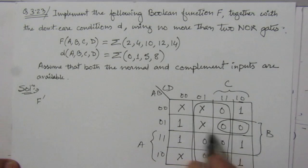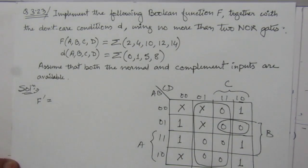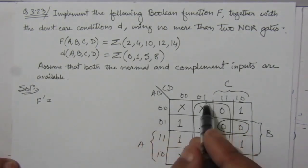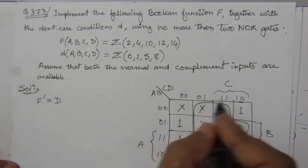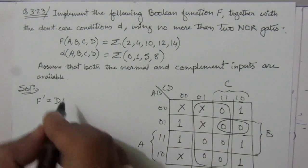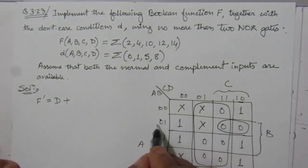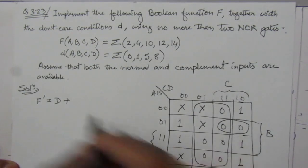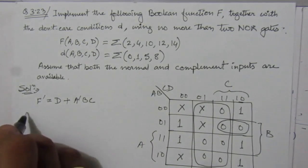Because we have considered 0 values here, we will write F bar equals. From this combination we will get A, B will be cancelled, and we will have D. From these 2 rows, we will have D plus, from this term, we will get A bar B C. So this is the complement function.